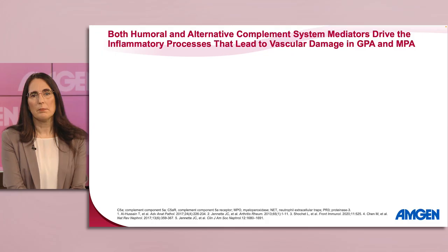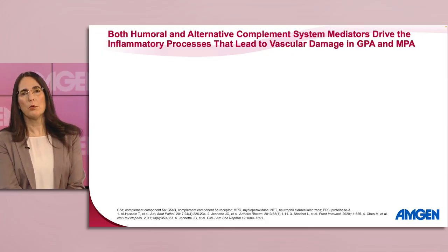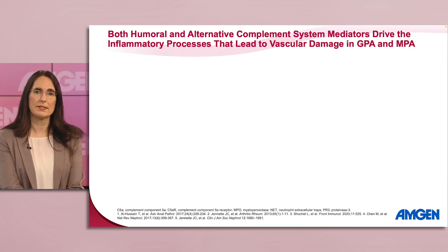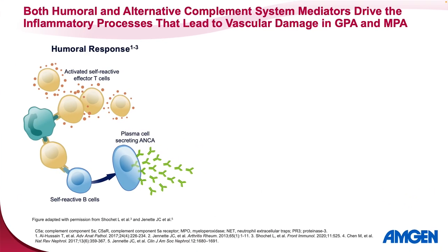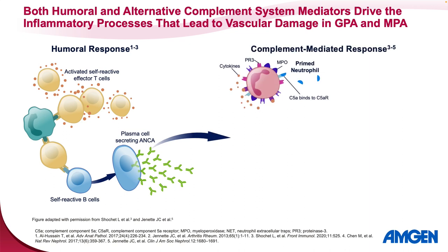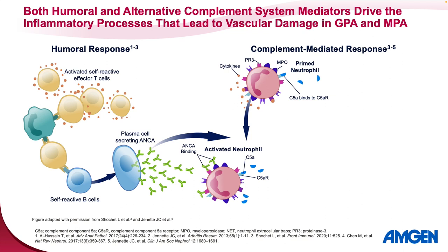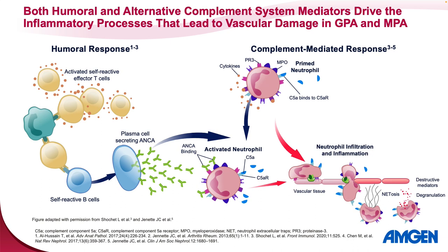Regarding mechanism of disease, the pathophysiology of GPA and MPA is driven by components of both humoral immunity and the alternative complement system. The process begins with loss of immune tolerance to self-antigens, myeloperoxidase, or MPO, and/or proteinase 3, PR3, and production of antineutrophil cytoplasmic antibodies, or ANCA, by circulating self-reactive B cells. Primed by cytokines and particularly alternative complement system protein C5a, neutrophils will present MPO and/or PR3 antigens. Binding of ANCA to these primed neutrophils will lead to neutrophil activation.